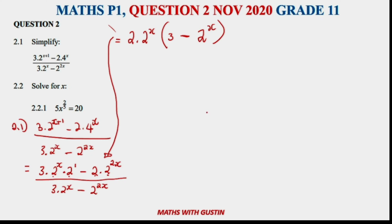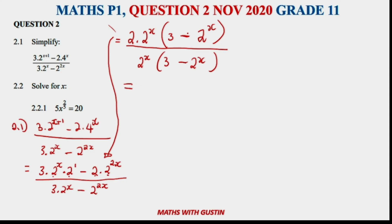At the bottom we take out 2 to the power of x as a common factor, leaving us with 3 minus 2 to the power of x. You can see the numerator and denominator both have (3 minus 2 to the power of x), so they cancel out. The 2 to the power of x terms also cancel, leaving us with 2 as the final answer.